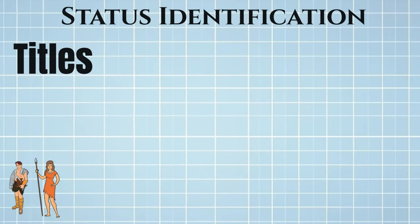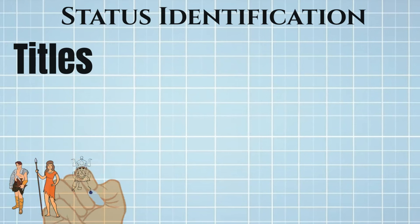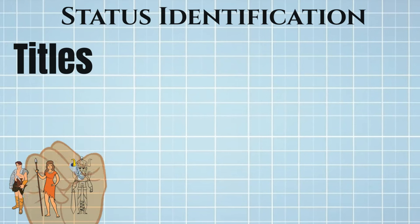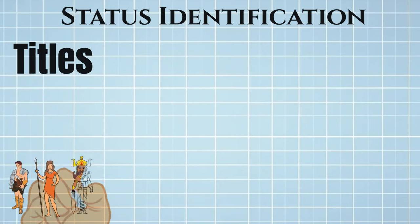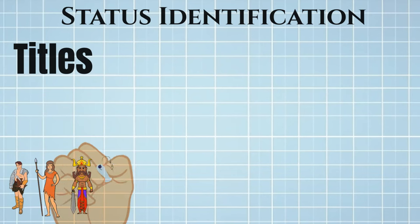Let's talk about titles. In academic settings, titles such as lecturer, professor, associate professor, department head, and dean illustrate a clear ranked structure in an achievement system. The same applies to ascribed systems — consider European nobility with titles like knight, baron, count, marquis, duke, and king. So titles are applicable to both achievement and ascribed systems.